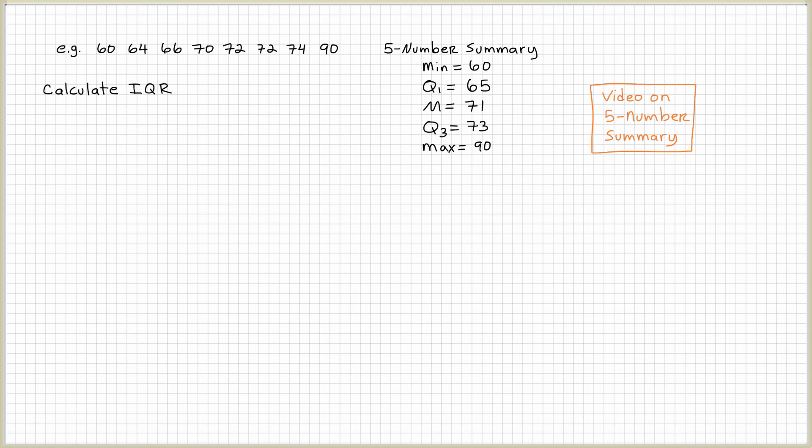The first thing we need to do is to calculate IQR. We're trying to figure out if any of my data points are outliers. So I need to calculate this IQR, which is the interquartile range, and that's going to equal Q3 take away Q1. I have those values right there, so I'm going to write them down: 73 take away 65, and that's going to equal 8. I'm going to need that value.